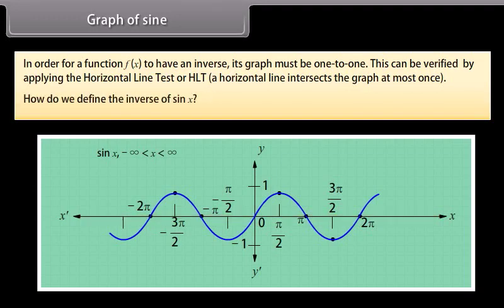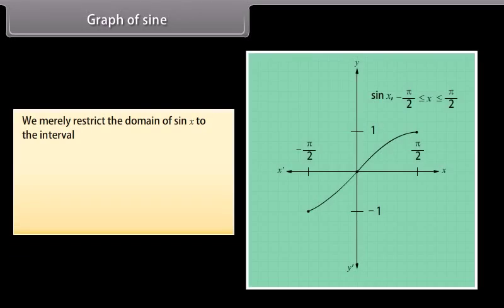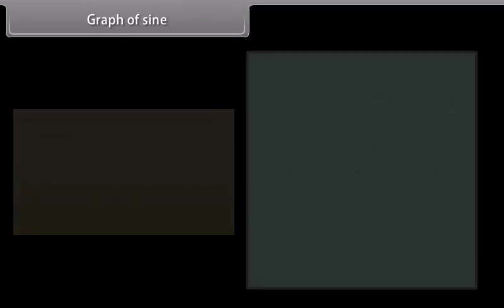So, how do we define the inverse of sin x? We merely restrict the domain of sin x to the interval −π/2 ≤ x ≤ π/2. On this interval, the graph does pass the HLT, yet keeps its full range [−1, 1]. Thus, sin⁻¹x or arc sin x exists. This is not the graph of sin⁻¹x — it is merely the part of the sin x function used to graph the inverse sine function.